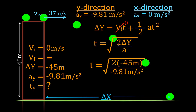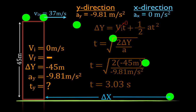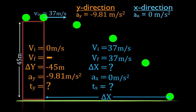Now I can plug in the values. Time equals the square root of two times minus 45 — don't forget the negative sign — divided by minus 9.81 meters per second squared. The time it takes for the object to fall in the y-direction is 3.03 seconds. Since the time in y and the time in x are the same, the time in the x-direction is also 3.03 seconds.